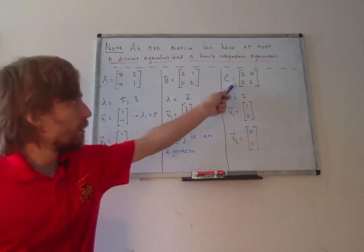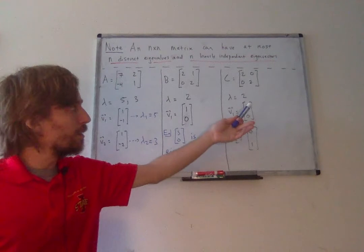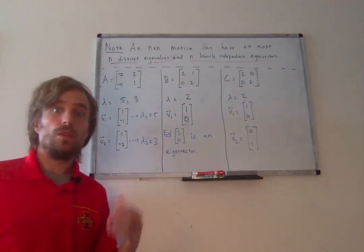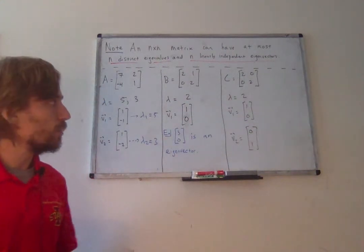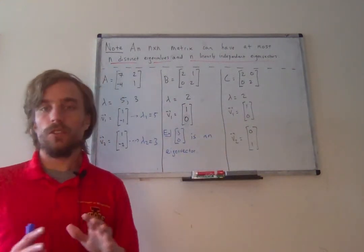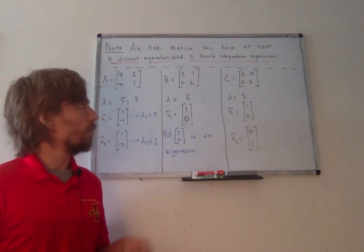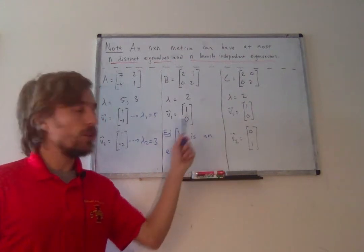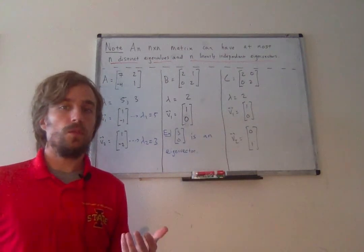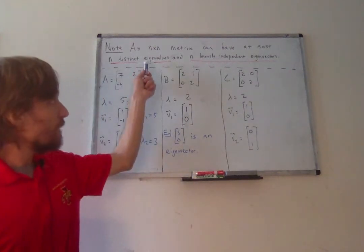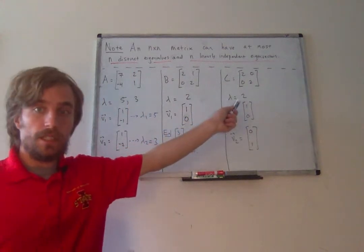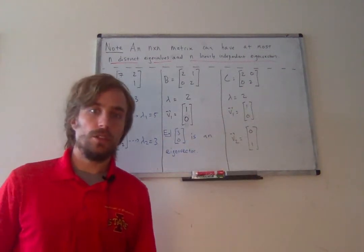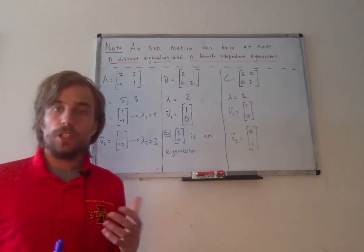But C also has one eigenvalue equal to 2. Because of the structure of C, it actually has two linearly independent eigenvectors: (1, 0) and (0, 1). So the dimension of the eigenspace corresponding to 2 is equal to 2 for C, whereas for B the dimension of the eigenspace corresponding to 2 is equal to 1. Even if we don't have n distinct eigenvalues, it's possible we could have n linearly independent eigenvectors — but it's also possible that we might not.